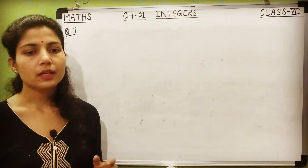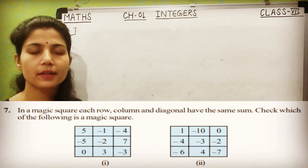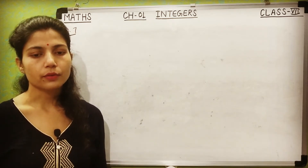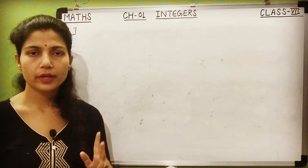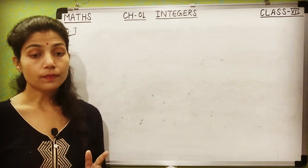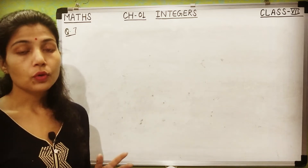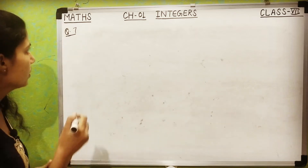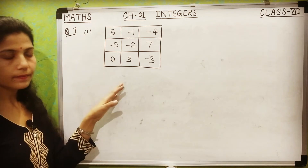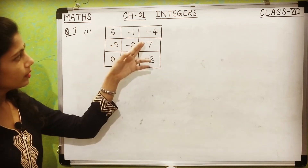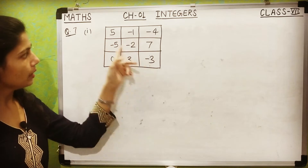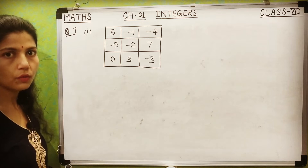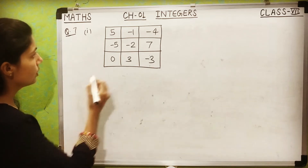Question number 7: In a magic square, each row, column, and diagonal have the same sum. Check which of the following is a magic square. In this question, you are given 2 squares and you have to check whether both are magic squares or not. Let's check the first part. The first magic square has 3 columns, 3 rows, and 2 diagonals. We will check each row, each column, and each diagonal.